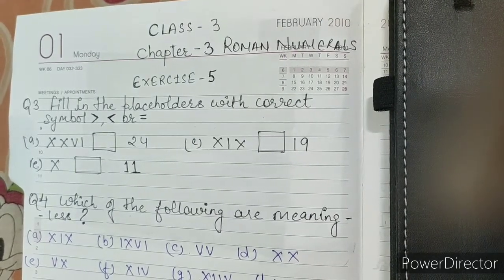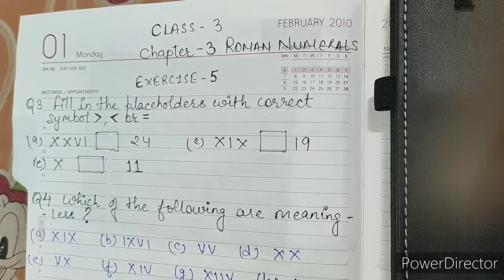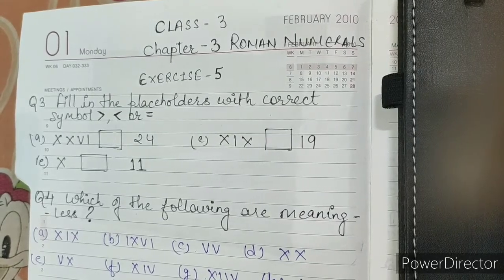Today we are starting our Chapter 3 Roman Numerals Exercise 5. Question number 3. Fill in the placeholders with correct symbol: greater than, less than, or equals.